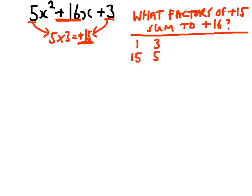So just write out all the factors of 15. 1 times 15 is 15, 3 times 5 is 15. Now, when we add them together, which ones make 16? Well, obviously, 1 plus 15 is 16.